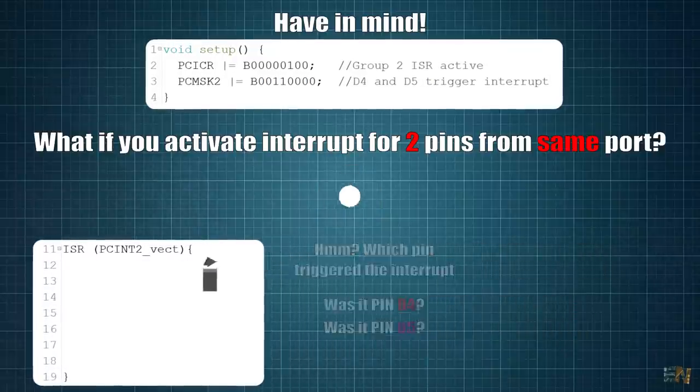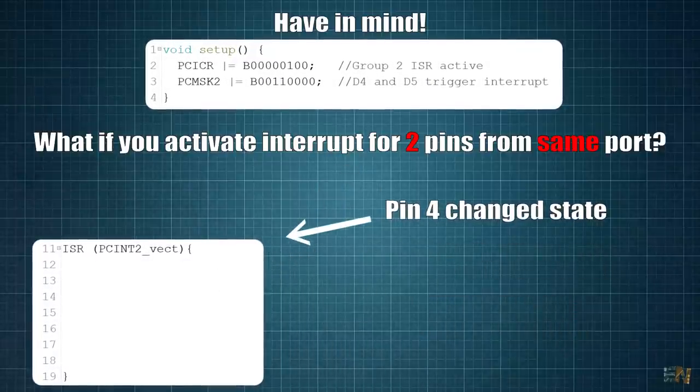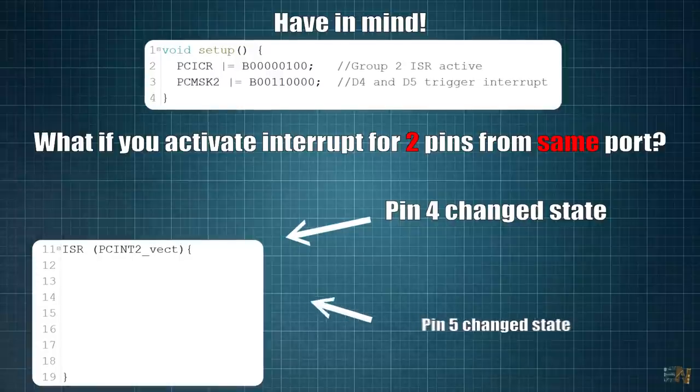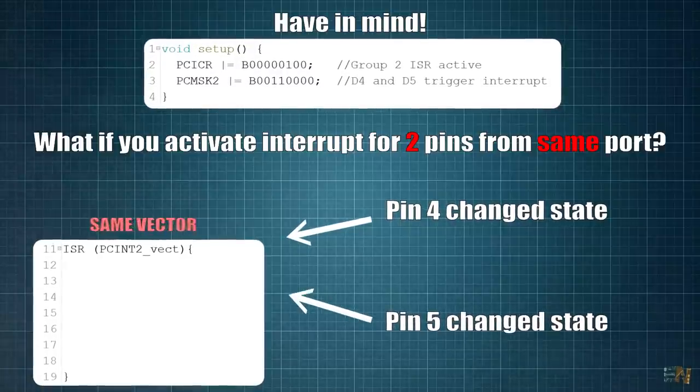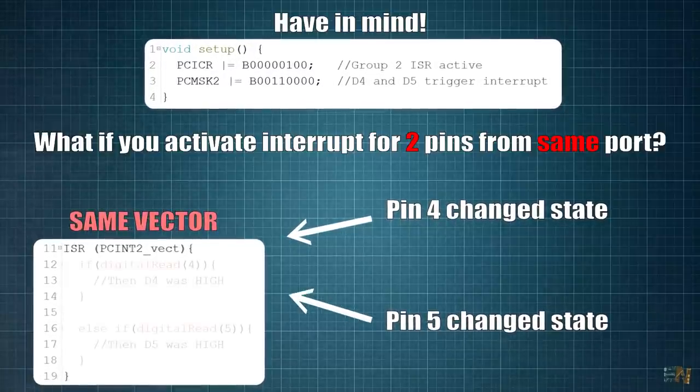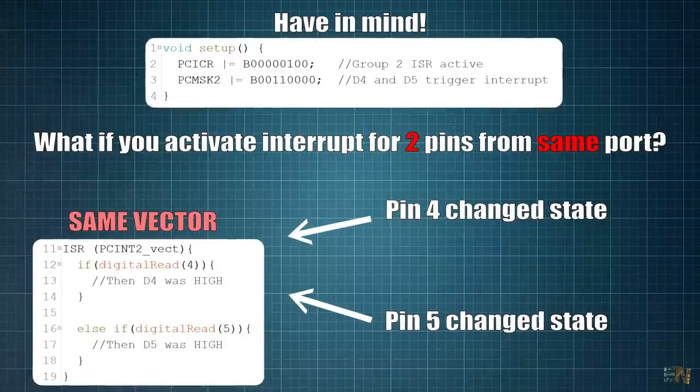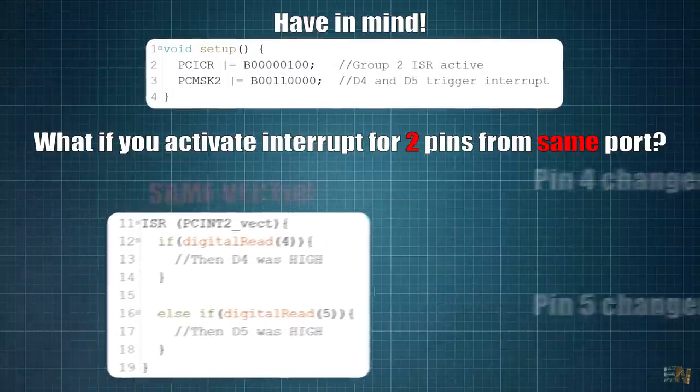If pin 4 made the interruption, we go to the ISR vector 2. If pin 5 made the interruption, we also jump to the ISR vector 2. That's why when using the PC interruptions from the same port, we must always consult which pin changes its value.